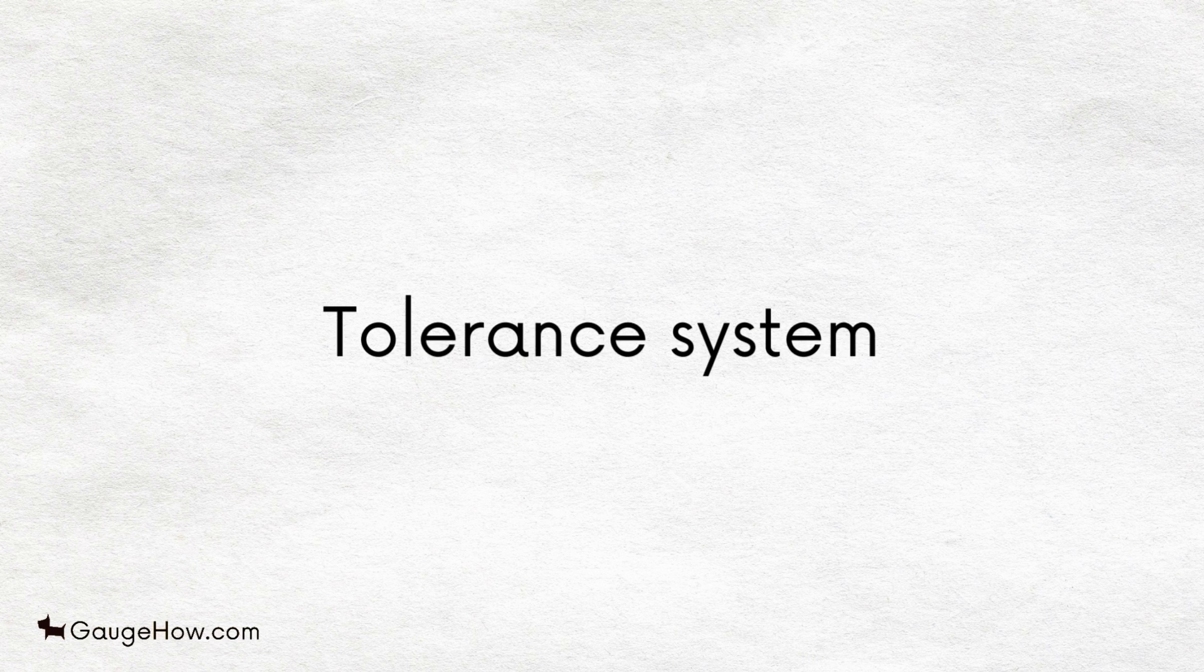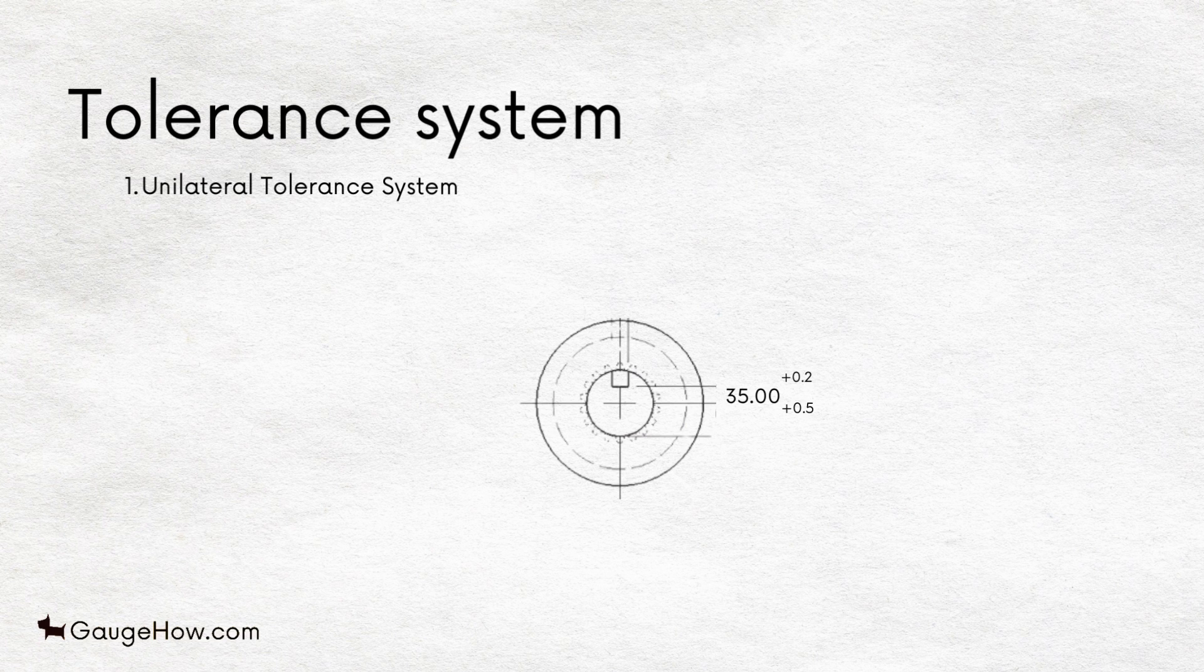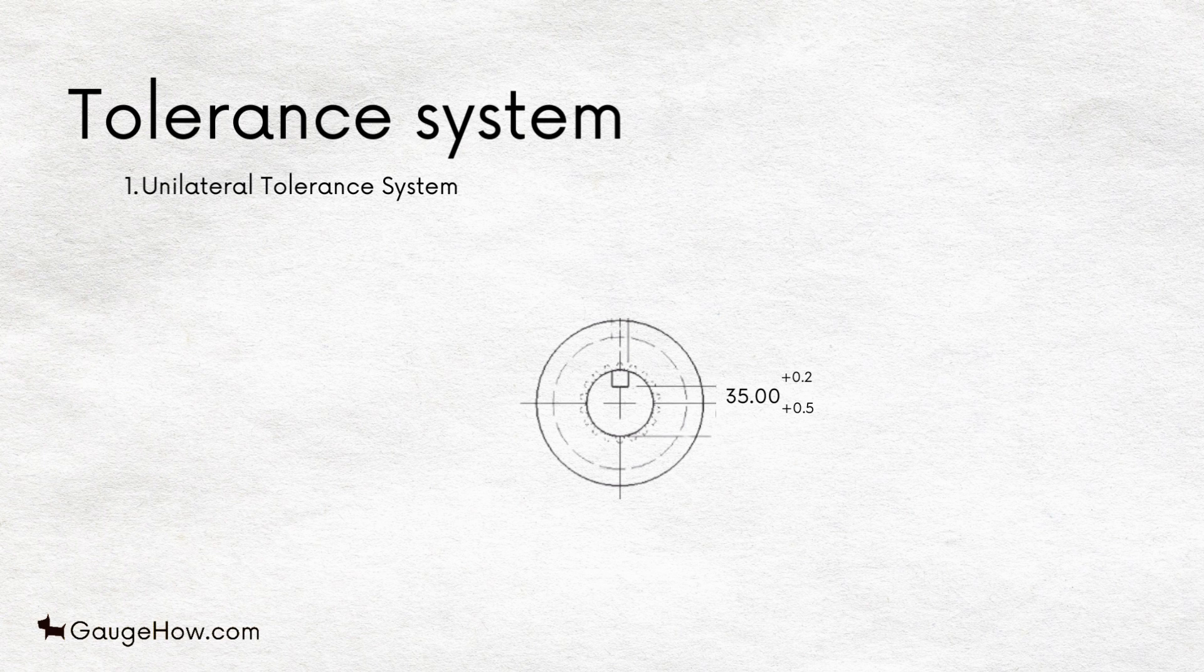Tolerance System. The tolerance on the dimensions can be specified in three ways. Unilateral Tolerance System. In this system, the tolerance is provided in only one direction from the basic size. For example, 35.00 plus 0.2.